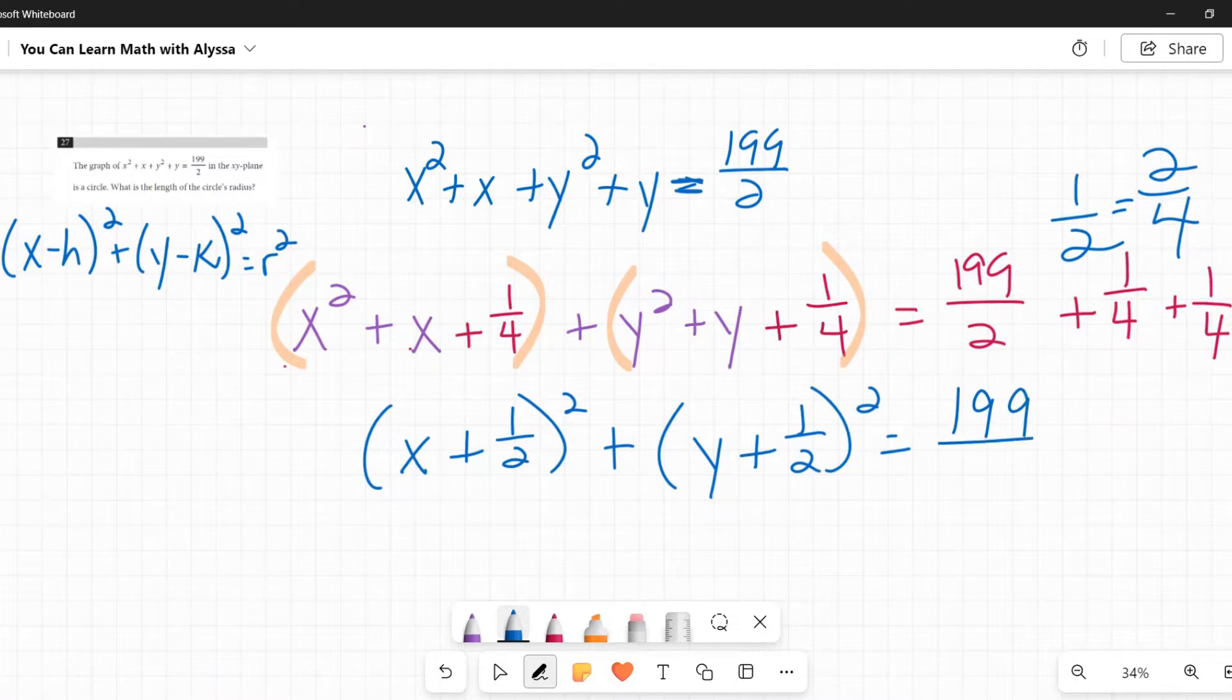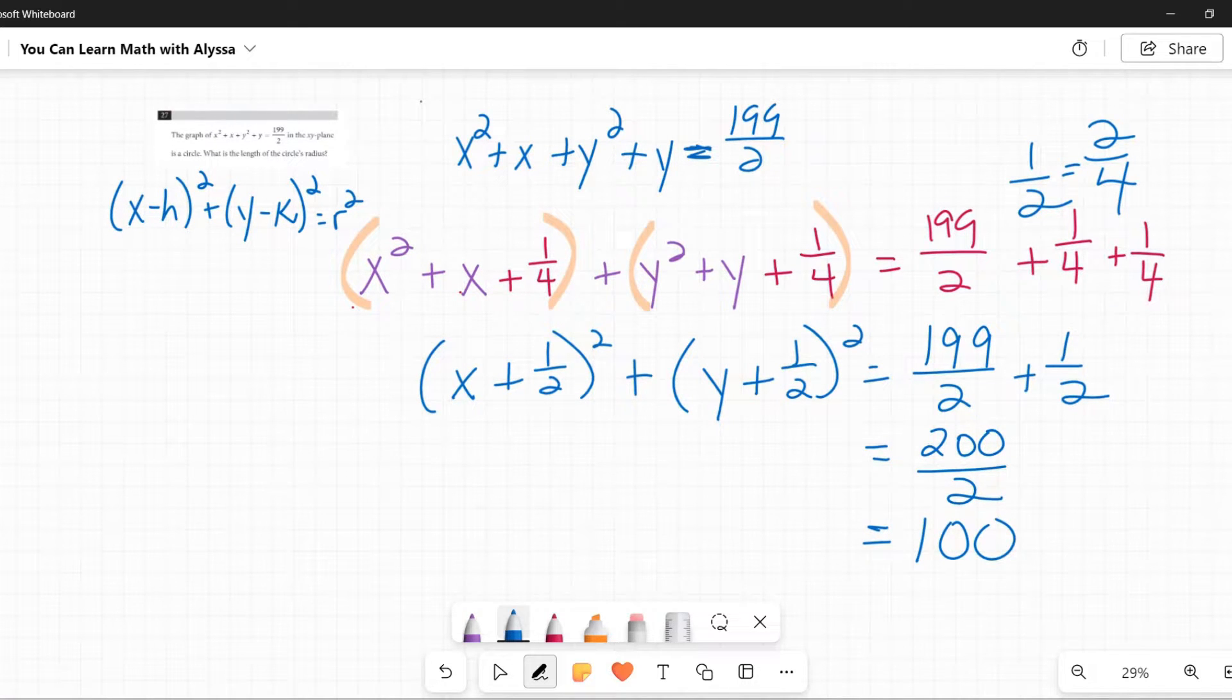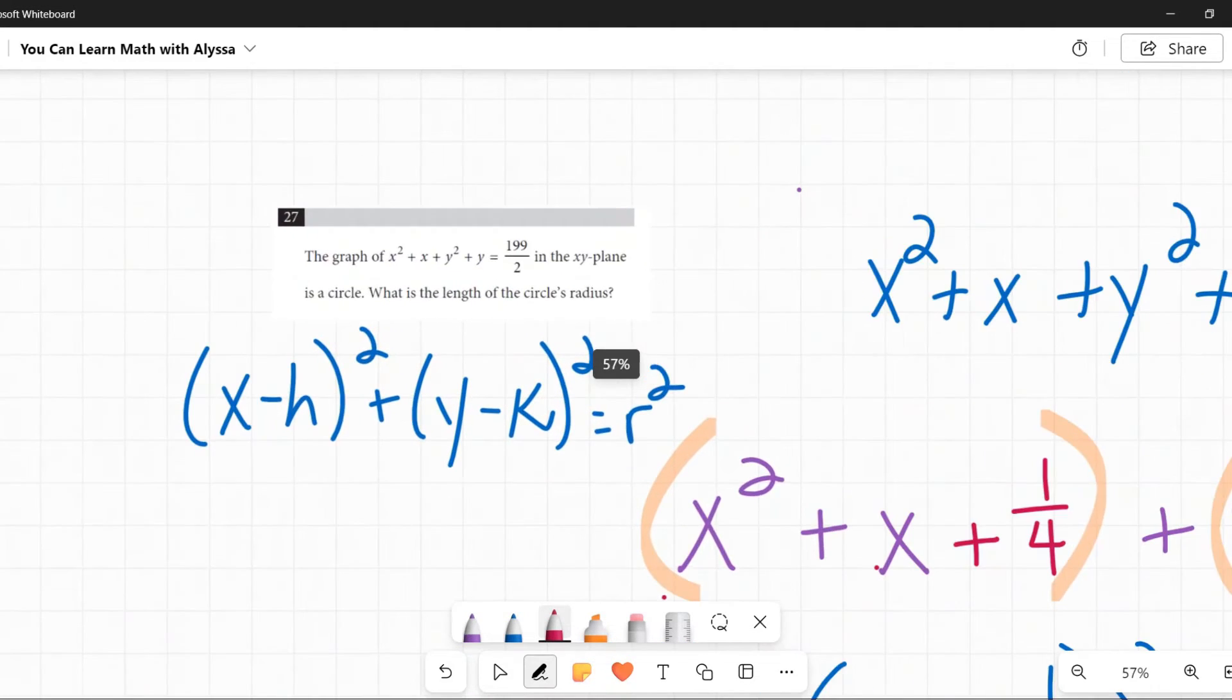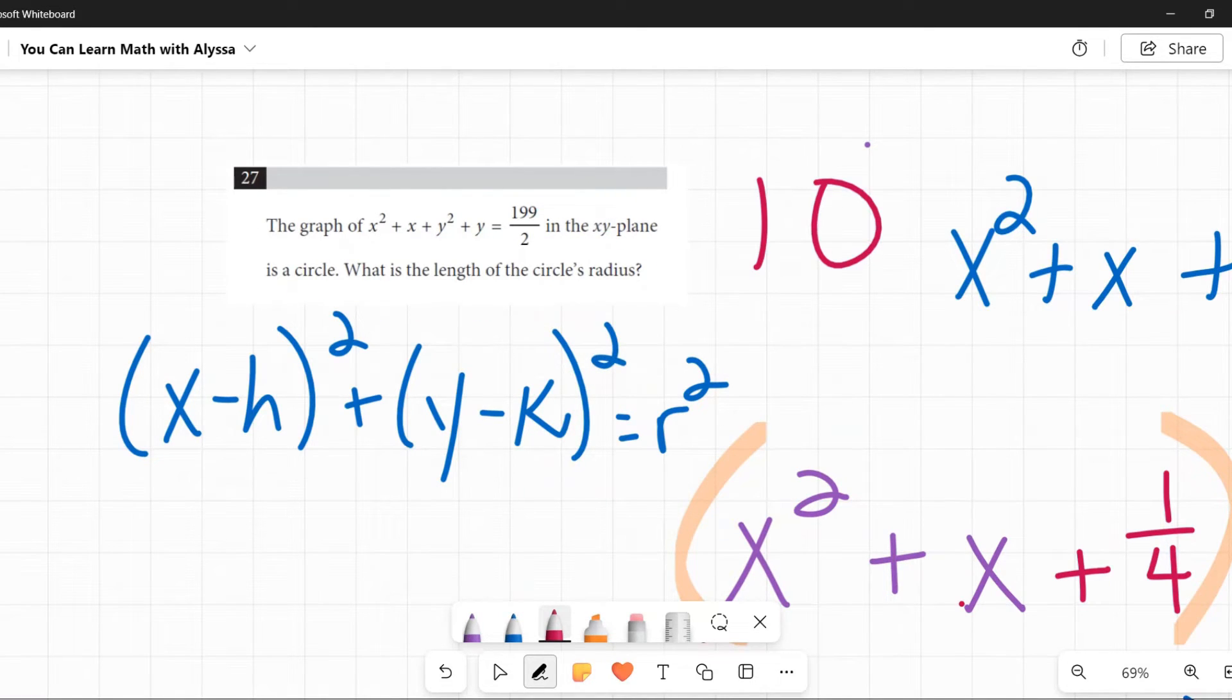Now it's 199 halves plus one half. So that 199 plus one is 200 halves. 200 divided by two is 100. Now this is starting to look like a proper equation. There is my equation of a circle. x plus one half squared in standard form plus y plus one half squared equals 100. So that 100 is, as we mentioned up here, the radius squared. So 100 is that radius squared. What is the square root of 100? That is 10. My radius is 10. And that was the question. What is the length of the circle's radius? 10 is my answer. Congratulations, you have made it to the end of this section.